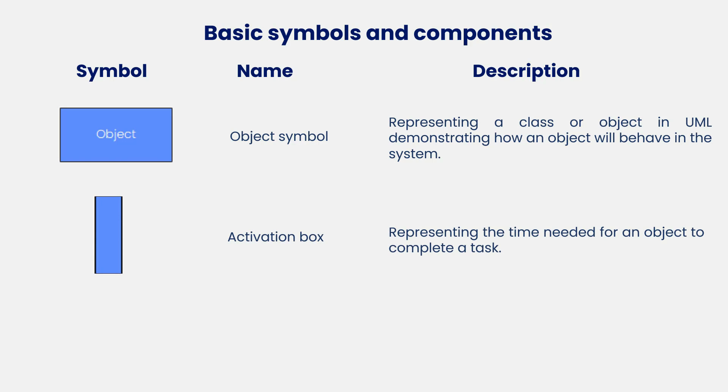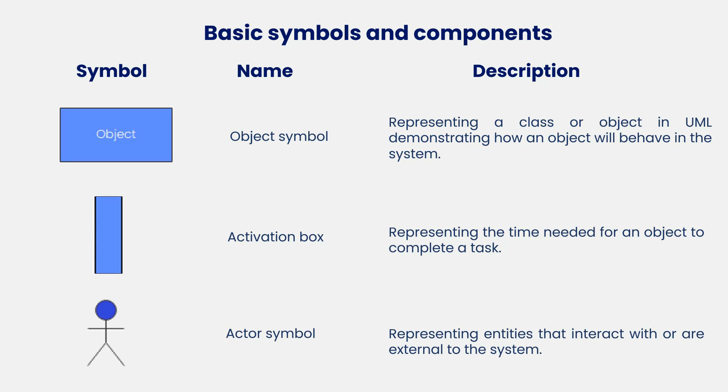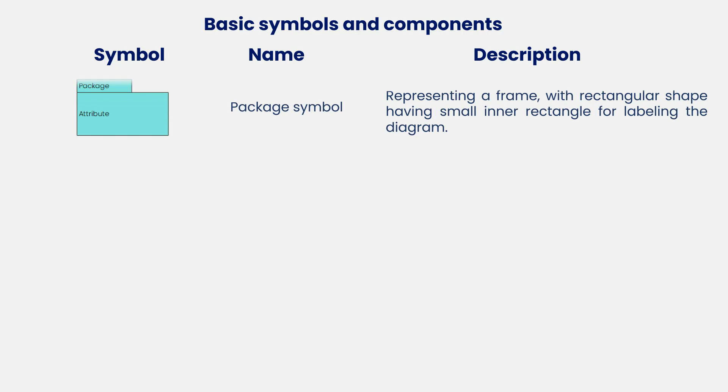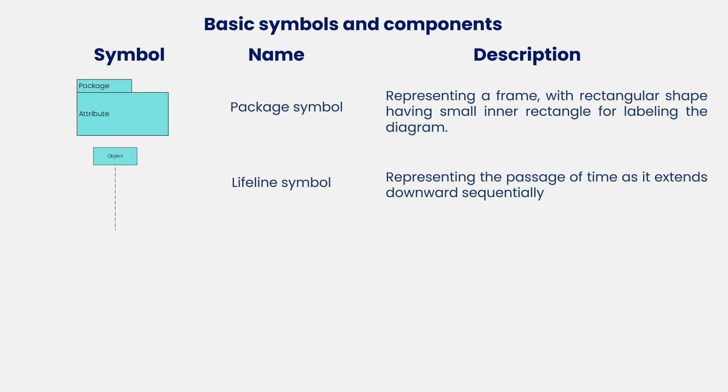The activation box represents the time needed for an object to complete a task. The actor symbol represents entities that interact with or are external to the system. The package symbol represents a frame with a rectangular shape having a small inner rectangle for labeling the diagram. The lifeline symbol represents the passage of time as it extends downward sequentially.